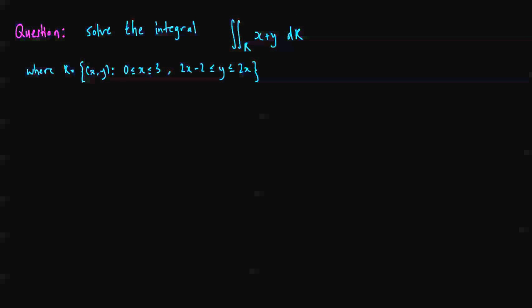Where R is the set of all x and y's such that x is between 0 and 3, and y is between the function 2x minus 2, straight line, and 2x. So let's quickly sketch that.